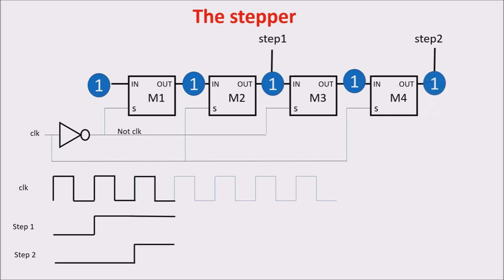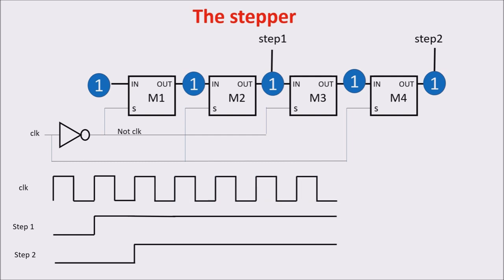When the third rise front of the clock arrives, M4 acquires the 1 on its input and step 2 goes to 1. With all the other fronts of the clock, step 1 and 2 remain up. You can see we started to create a stepper, but we need some other gates in order to lower the steps after a clock period.